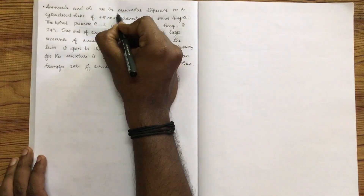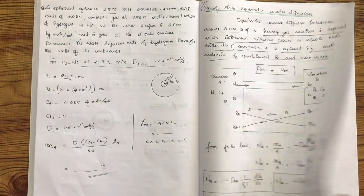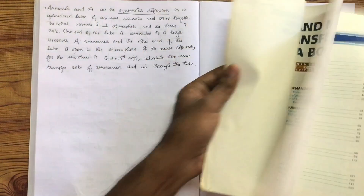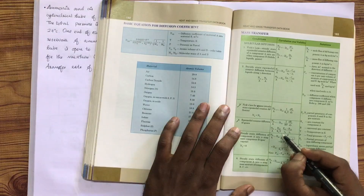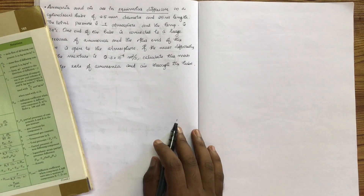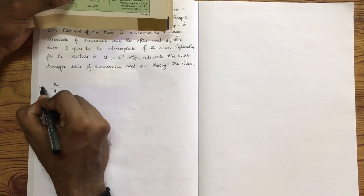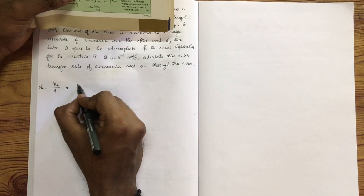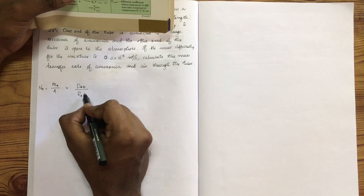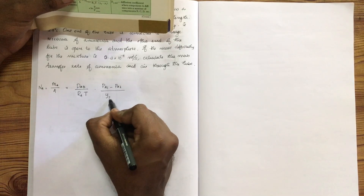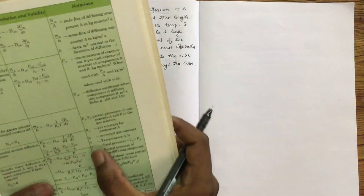Now, ammonia and air equimolar diffusion. The equimolar diffusion equation: NA by A in terms of pressure difference. NA is equal to DAB divided by R into T, multiplied by the partial pressure difference PA1 minus PA2, divided by y2 minus y1. R here is the universal gas constant.